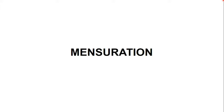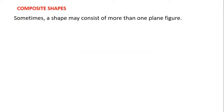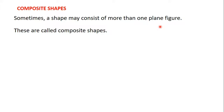We are on the topic of mensuration. In the previous video we learned how to find the area and perimeter of a segment. In this video we are going to learn how to find the area and perimeter of composite shapes. Sometimes a shape may consist of more than one plane figure — these are called composite shapes. We've learned about plane figures; examples are quadrilaterals, circles, and triangles, and we've learned how to find the area and perimeter of these plane figures.